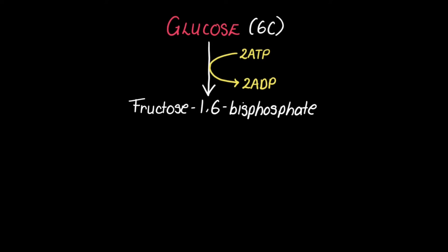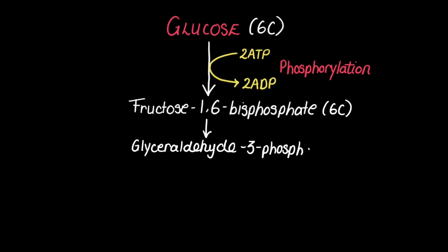This produces fructose 1,6-bisphosphate. This phosphorylation makes the molecule much less stable, and therefore the fructose 1,6-bisphosphate then splits into two 3-carbon molecules known as glyceraldehyde 3-phosphate.